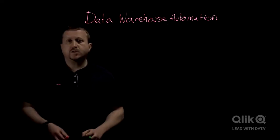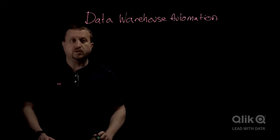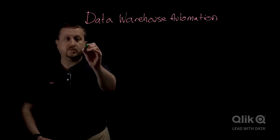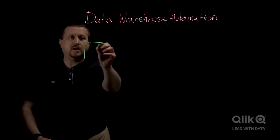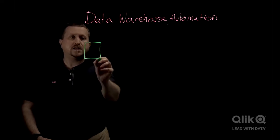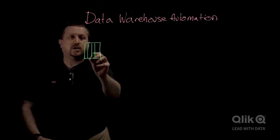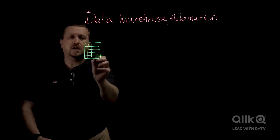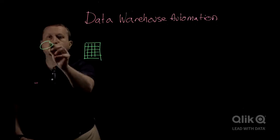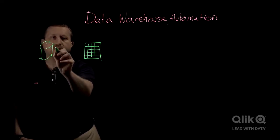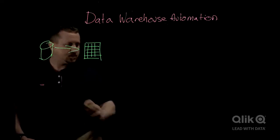So in general, we use three zones. We have a landing zone, and typically the data in this landing zone is structured as tables and it mirrors the data from our transactional systems.